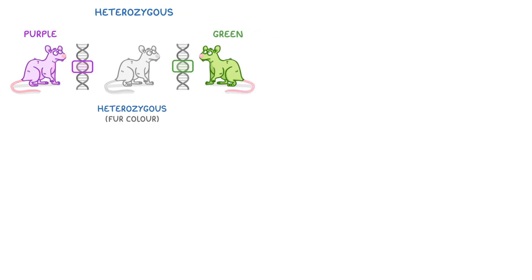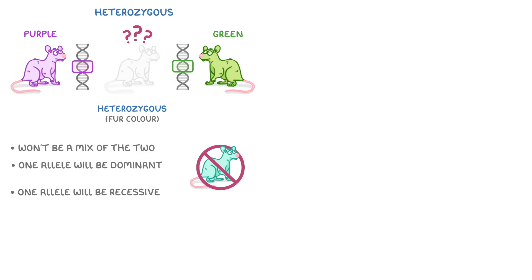This brings a bit of a problem though. Say we had a mouse that was heterozygous for fur color, with one allele coding for purple fur and the other for green fur. What color would our mouse be? Well, it's not going to be a mix of the two. Instead, one of the alleles will be dominant and the other one will be recessive, and it's always the dominant one that gets expressed.